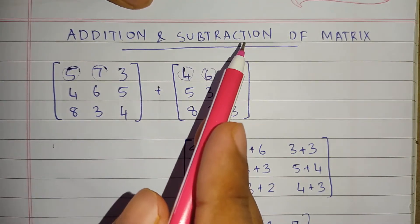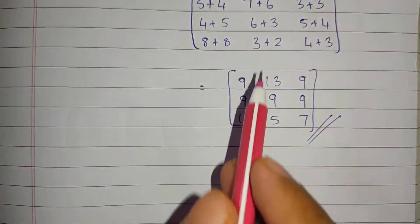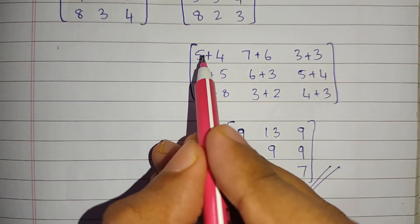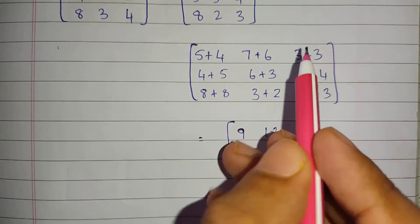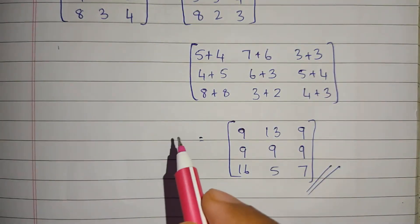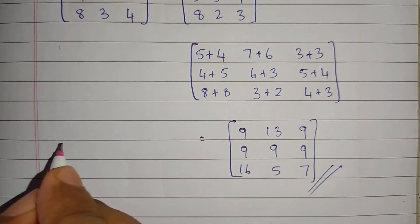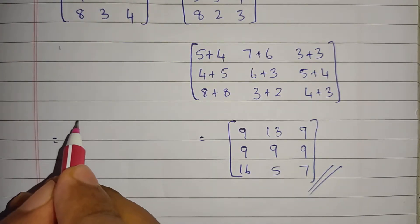Now for the subtraction, it's really easy. If you get the addition of these two matrices, what we should do is where we gave the plus sign, just put the minus sign. Then we'll get the subtraction of these matrices. I'm going to put the answer here.